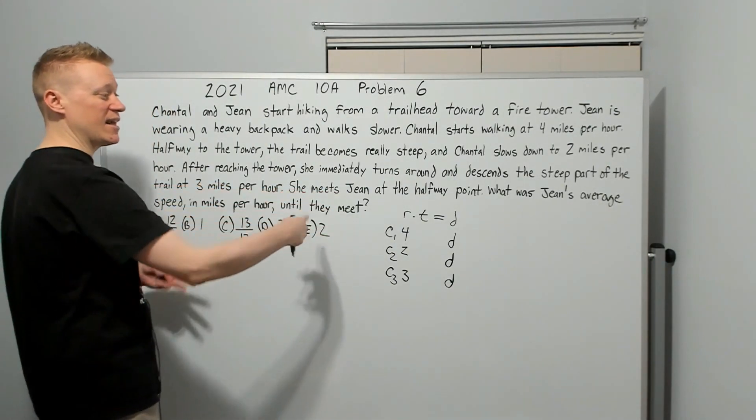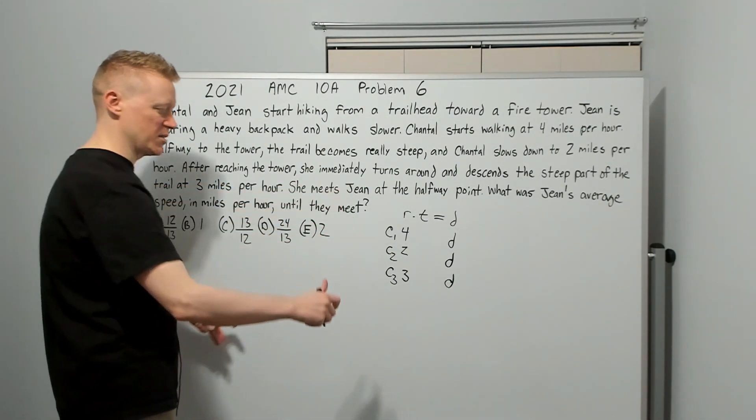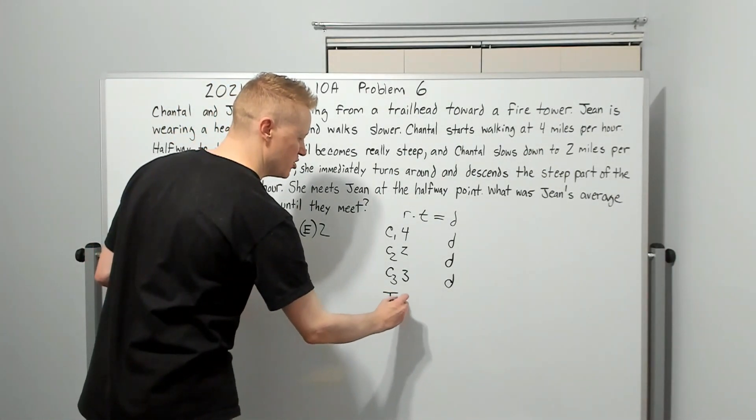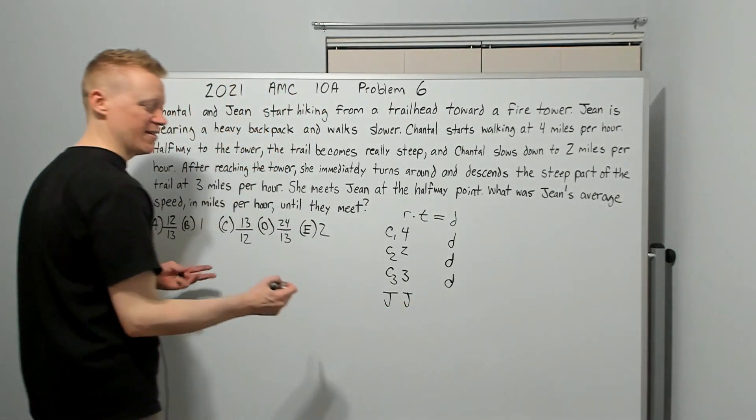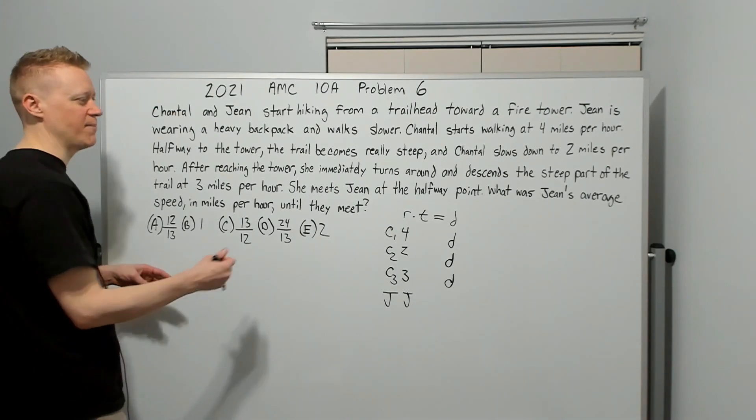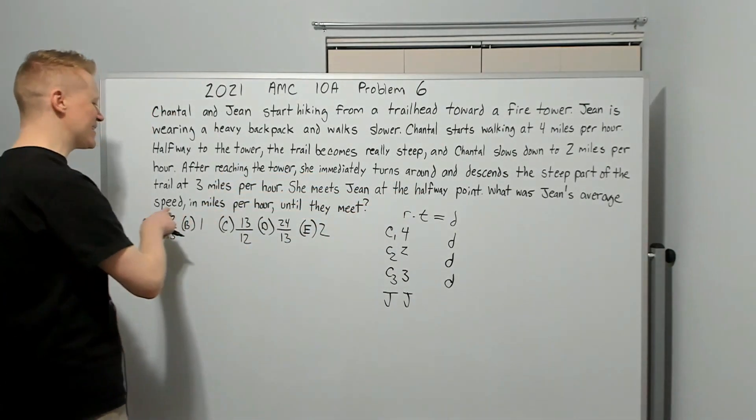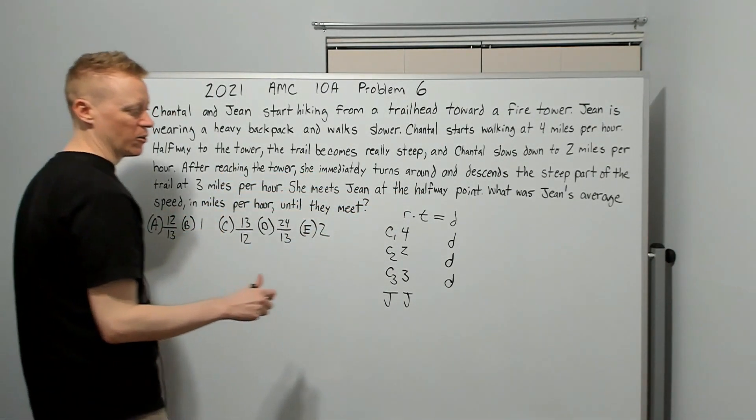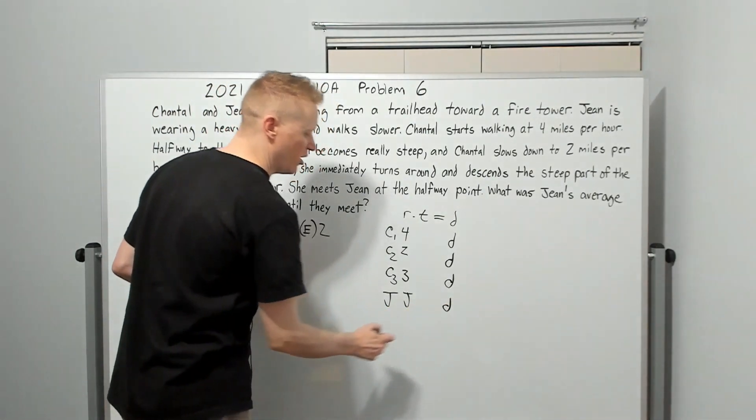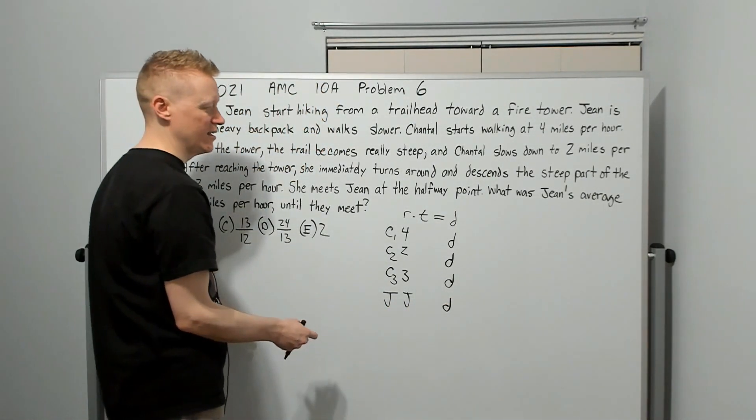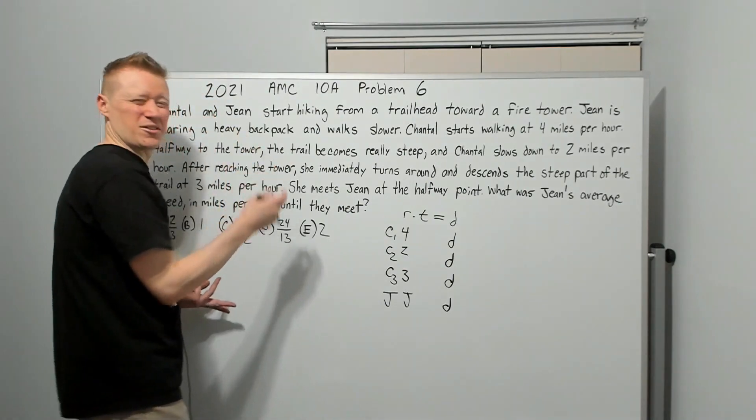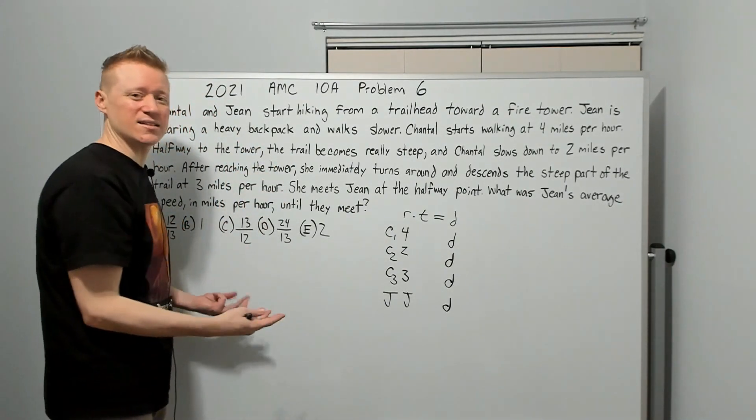Wait a minute. What's the steep part? It says that halfway to the tower, the trail becomes steep. So it's the halfway point again. Just got to remind yourself. So this is going to be C3. Descends the steep part of the trail at three miles per hour. So she's going three miles per hour. All of these distances are equal. She meets Jean at the halfway point, where it's about to become steep. So Jean's rate, we're just going to call it J. What was Jean's average speed in miles per hour until they meet?